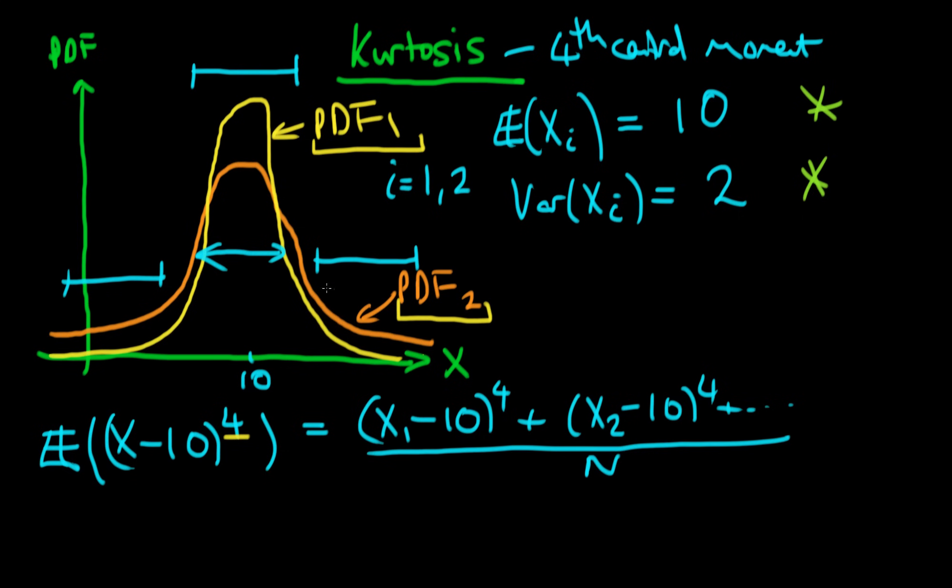And that's sort of represented by its sort of fatter tails of its distribution. And because it has more points which lie a sort of reasonable distance away from the mean, when I raise that sort of distance to the power of four, it means that this sort of second variable is going to have a much higher fourth central moment than the first. And this is kind of what we refer to as the kurtosis of a distribution.